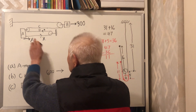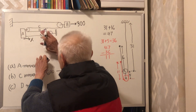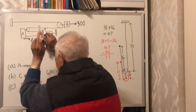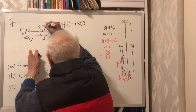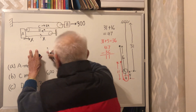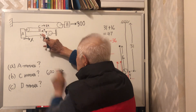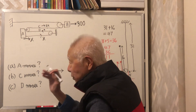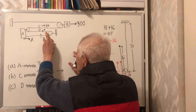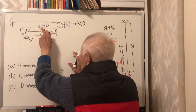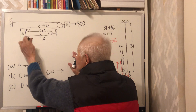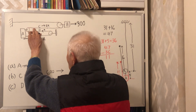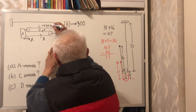Now look at this: A moves x. If D did not move and only A moves, C would move double that amount — 2x. However, D is also moving x, so in addition to the 2x due to the motion of A, there is an additional x. So the total motion of C is 2x plus x.